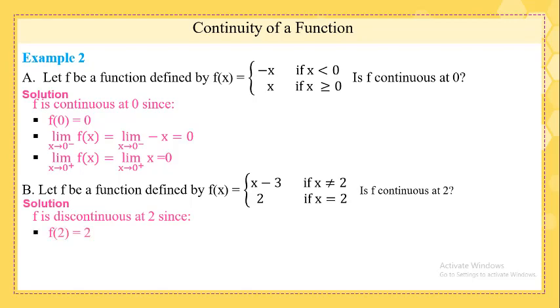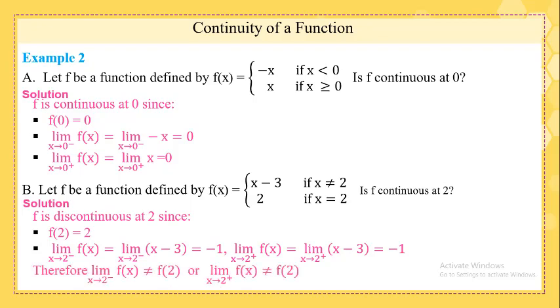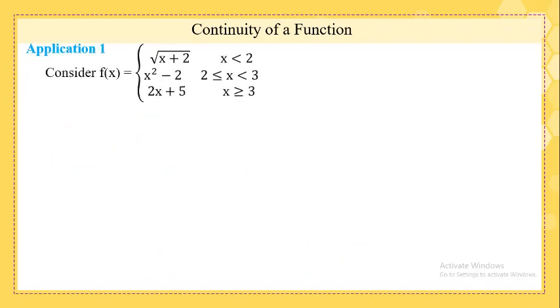We observe that f(2) is equal to two, but the left limit at two is minus one and the right limit is minus one, but not equal to f(2) which is equal to two. We say F is discontinuous at two.